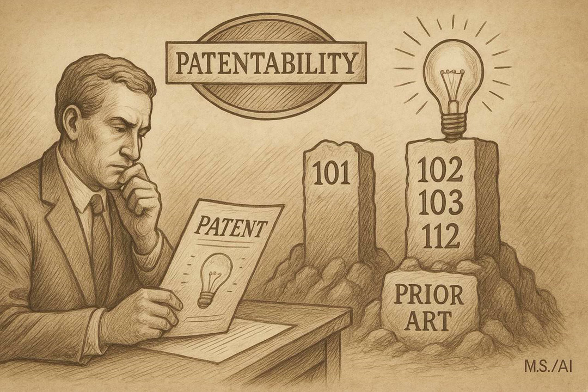Novelty under Section 102 means your invention wasn't anticipated by the prior art — the universe of public knowledge existing before your effective filing date: patents, publications, public uses, sales, offers for sale, anything accessible to the public. If a single piece of prior art discloses every single element of your claimed invention, arranged as in your claim, then your invention isn't novel — it's anticipated. The MPEP also mentions pre-AIA 102(e), which relates to older applications filed before the America Invents Act. Under the old law, certain published U.S. patent applications could count as prior art as of their filing date, not just their publication date.